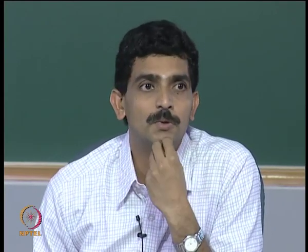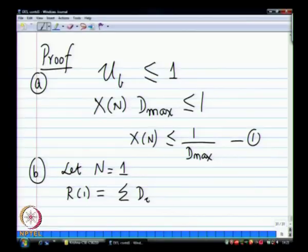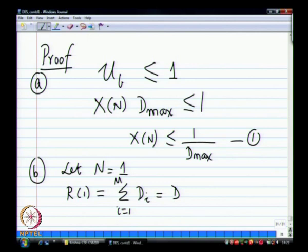To find N*, just equate the two bounds and you get N* equals (D + Z) over D_max. This bottleneck analysis is used for system design — you find N* and never load more than that many jobs. For R(N), plotting N versus R(N), the lower bound is a flat line at D under light loads, and the other lower bound has slope D_max with y-intercept minus Z, increasing with N. The real response time will be close to D initially, then start increasing. You want to operate close to D to avoid queuing.